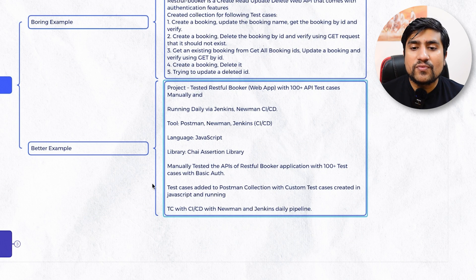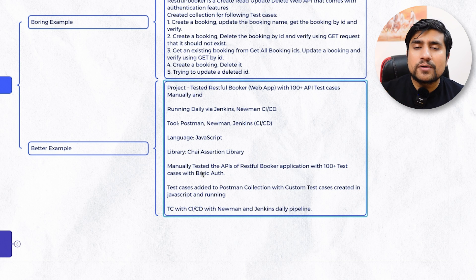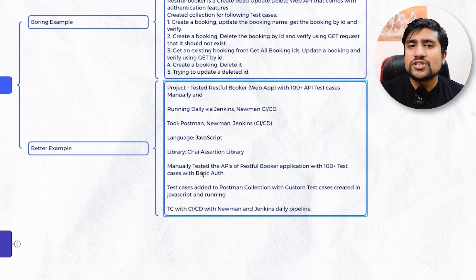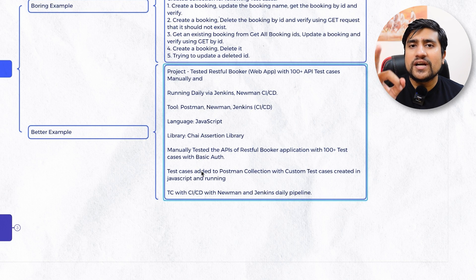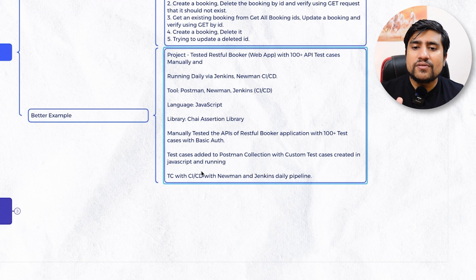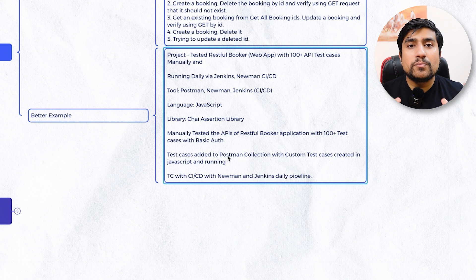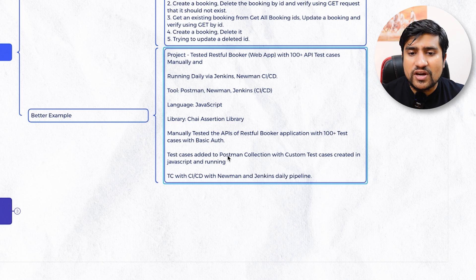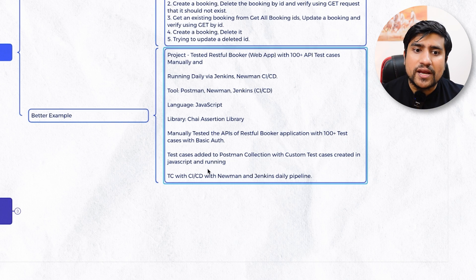A better example would be where you specifically say in the subject line: tested a RESTful Booker application with 100-plus API test cases, which were running daily using Jenkins and Newman. Tools used: Postman, Jenkins, and Newman. Test cases were written in JavaScript with Chai as a library. 100-plus test cases covered basic auth and digest auth authentication. CI/CD with Jenkins and Newman was used for daily pipeline. Overall the keywords are modified to make it a much better example compared to the previous one.